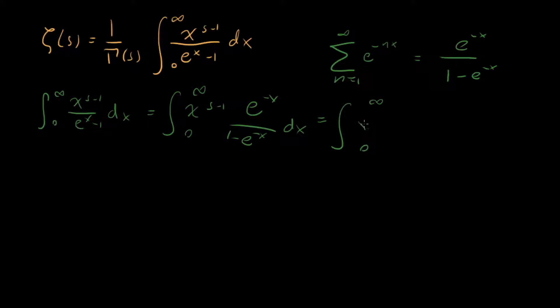So we have same integral, x to the s minus 1, and then this series, e to the minus nx from n equals 1 to infinity. And don't forget that dx. Okay, so we're making some progress.